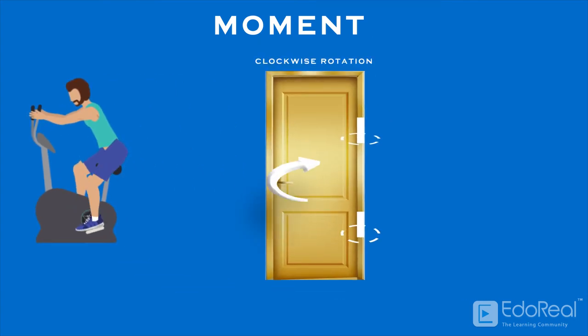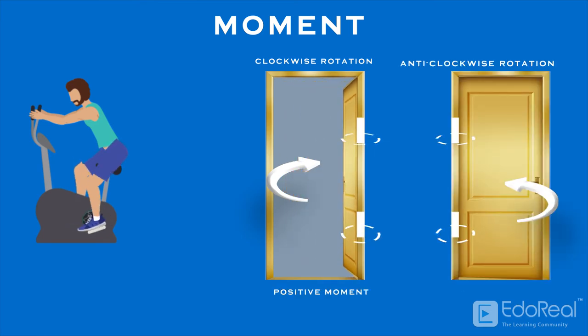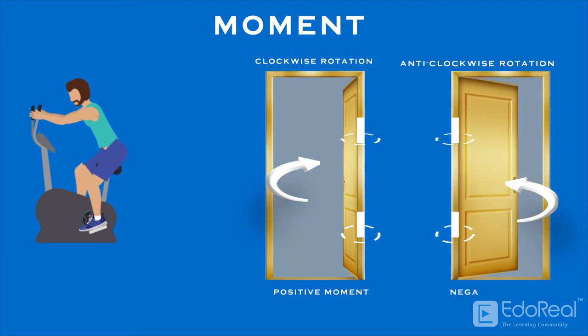A clockwise rotation about the center of moments will be considered a positive moment, while a counterclockwise rotation about the center of moments will be considered negative.